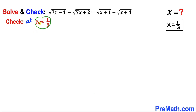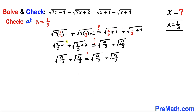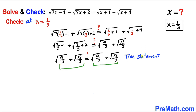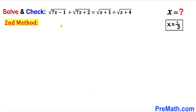Now we check x equals 1/3 for any extraneous solutions by substituting it into the original equation. After substituting, the left-hand side simplifies to √(4/3) plus √(13/3) and the right-hand side simplifies to the same values. The left-hand side is indeed equal to the right-hand side, confirming this is a true statement. Therefore x equals 1/3 is a valid solution.